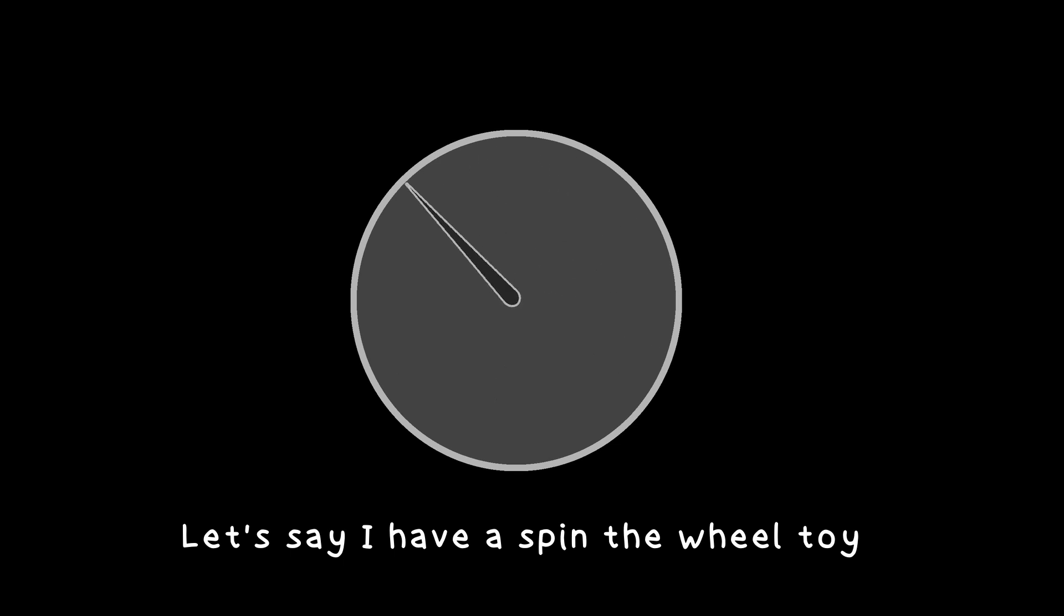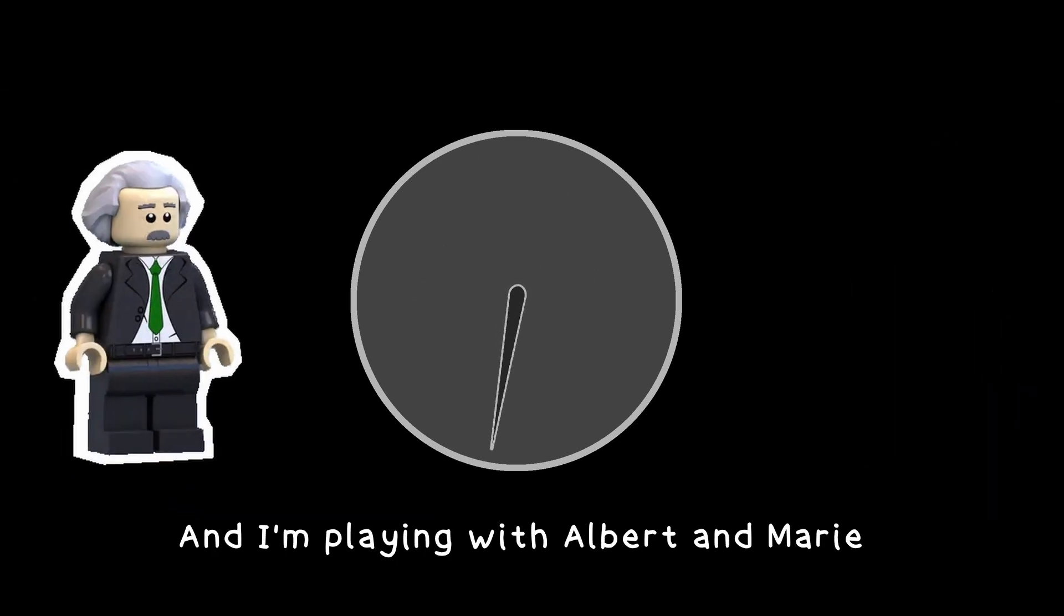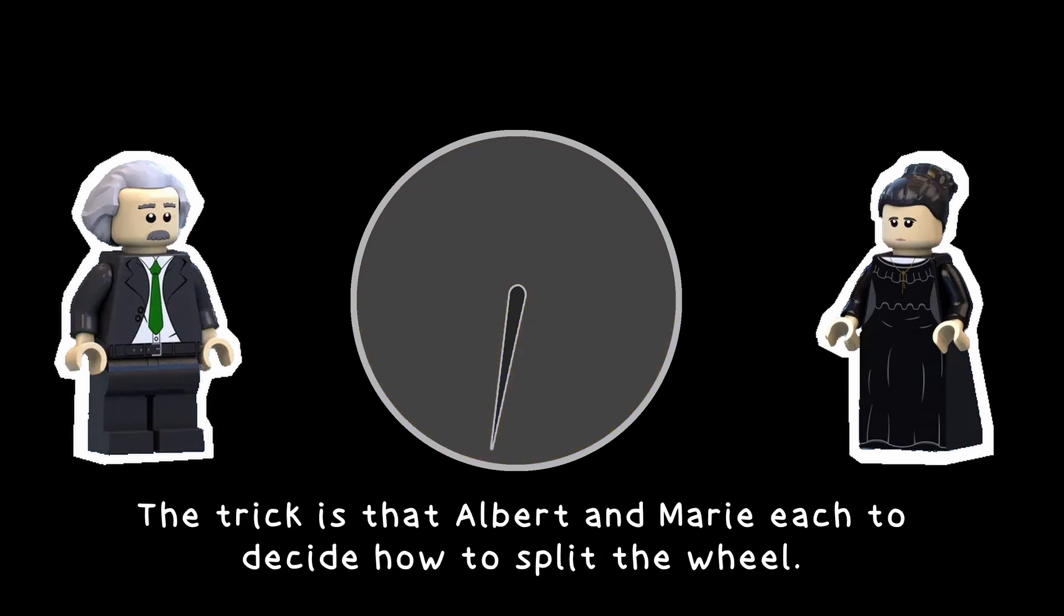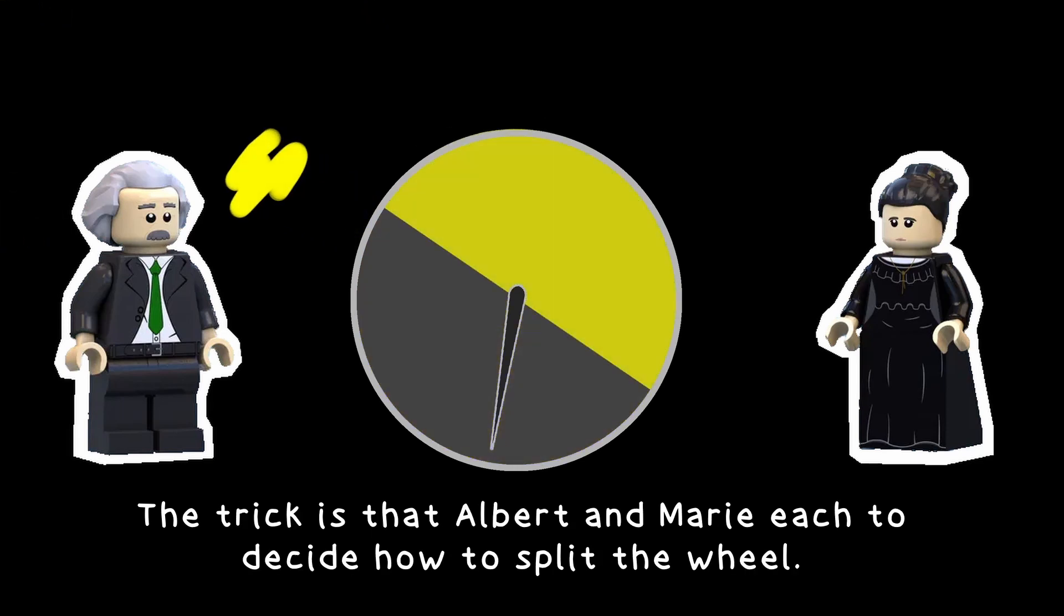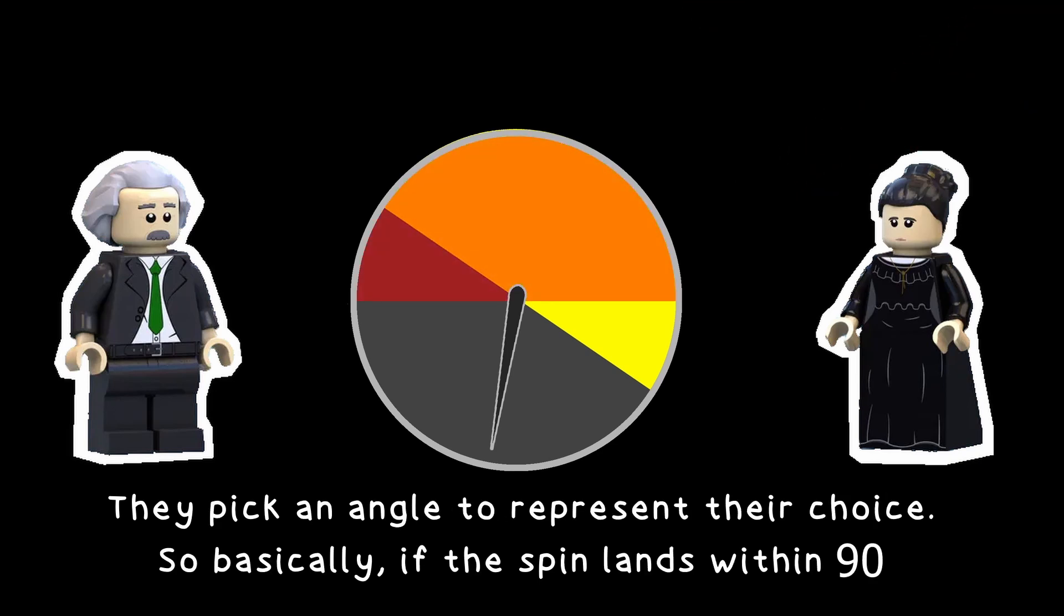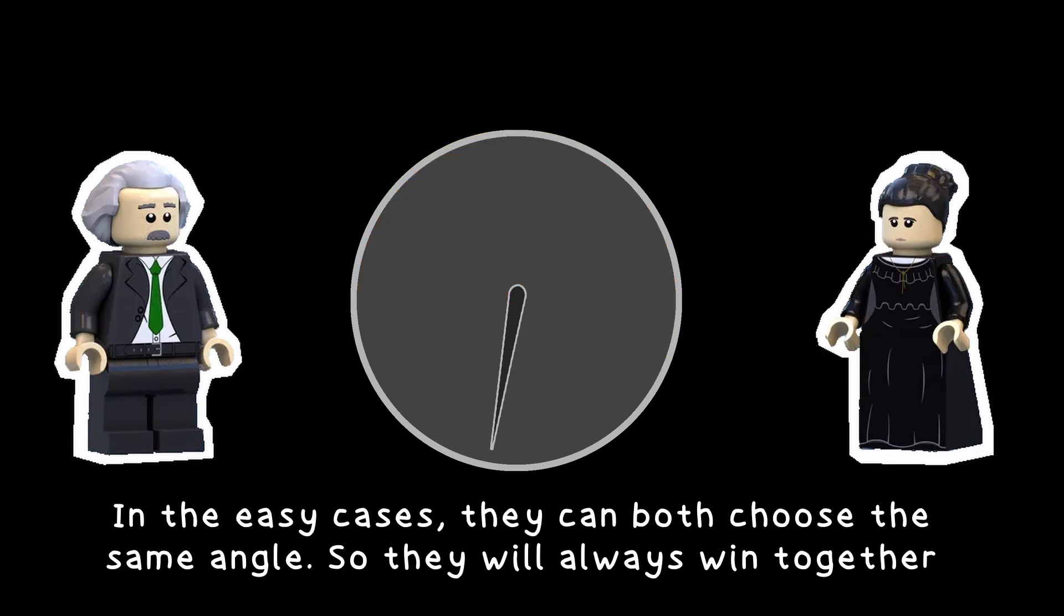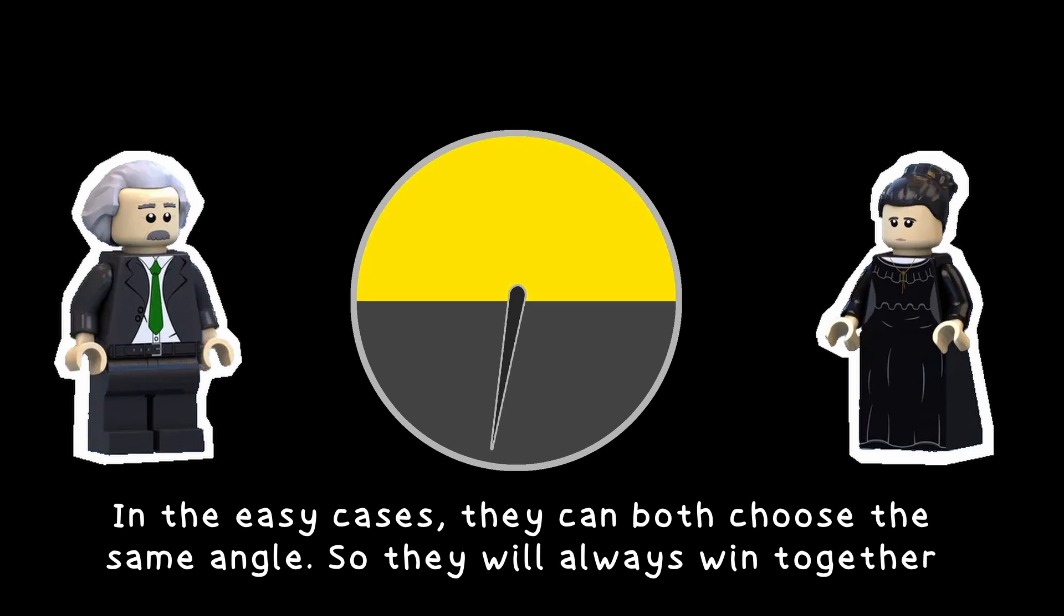Let's say I have a spin the wheel toy and I'm playing with Albert and Marie. They have to guess on which half the spin will land on. The trick is that Albert and Marie each get to decide how to split the wheel. They pick an angle to represent their choice. So basically, if the spin lands within 90 degrees of that angle, so half the circle, they win. In the easy cases, they can both choose the same angle, so they will always win together or lose together.